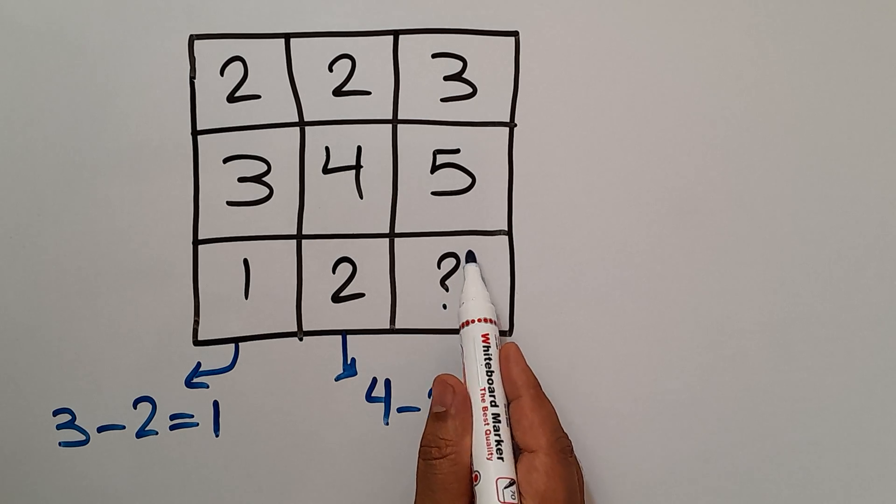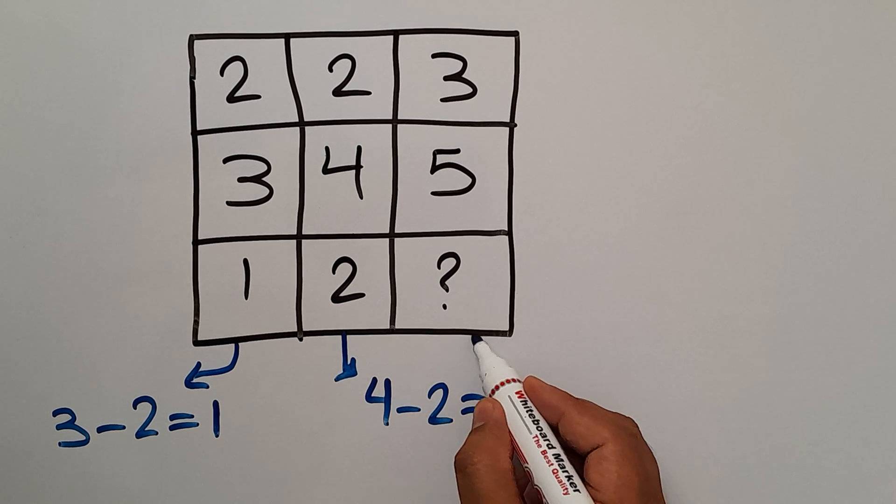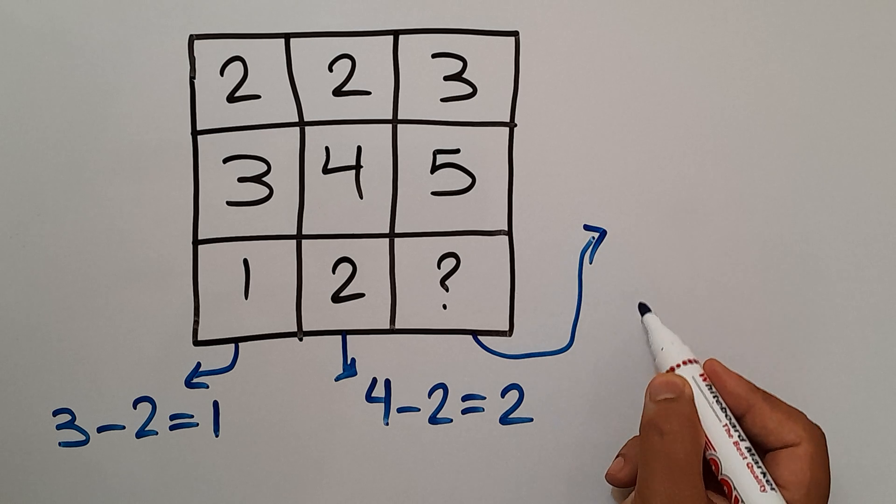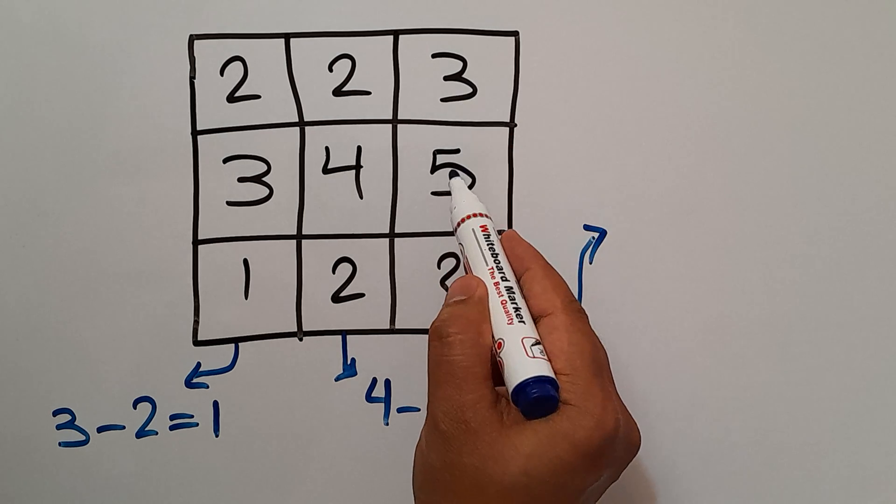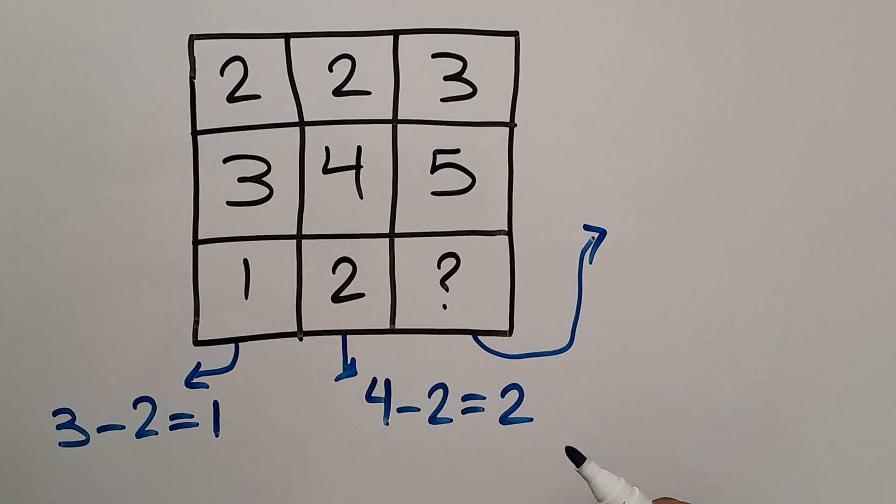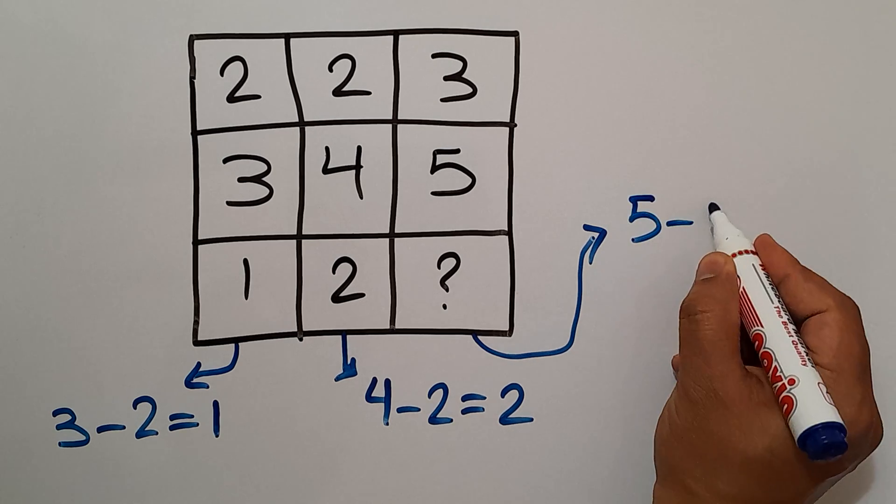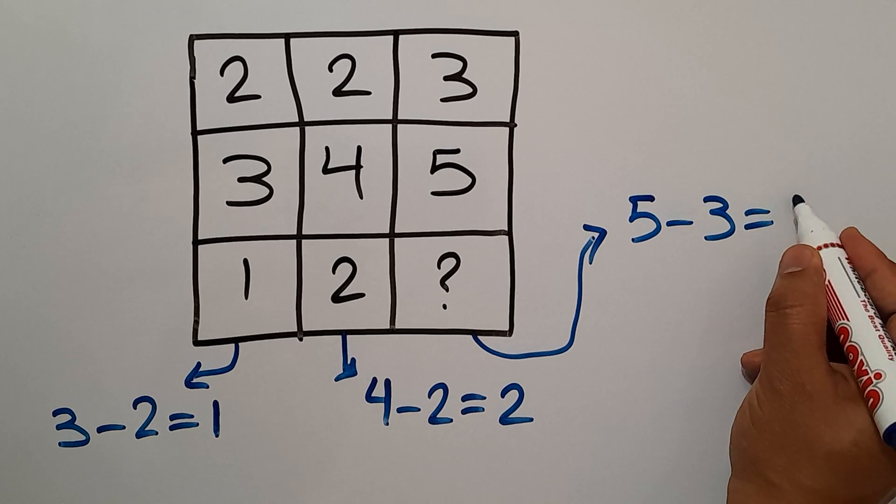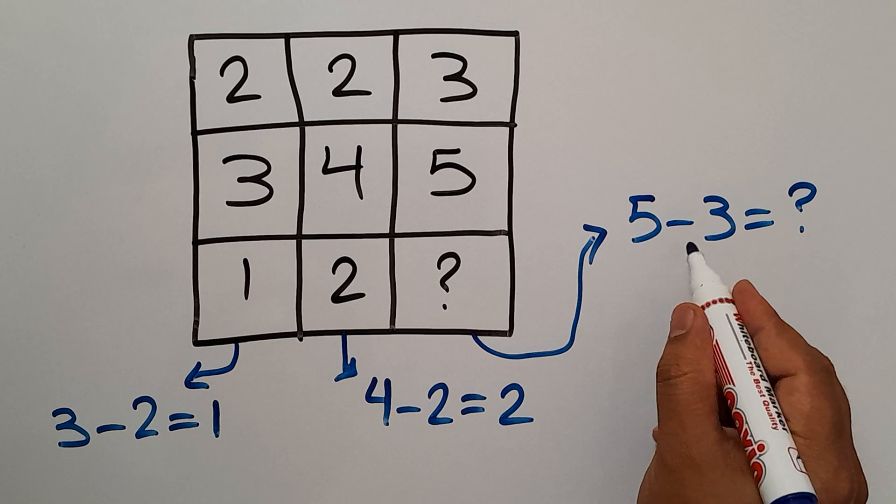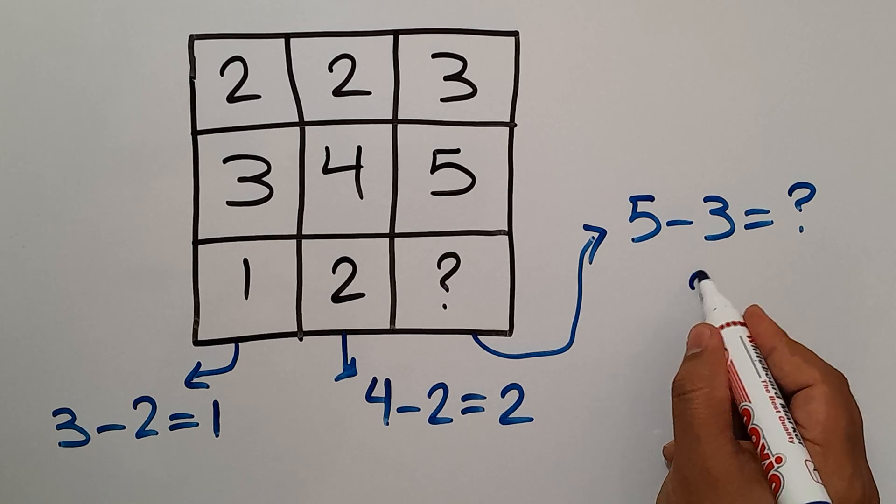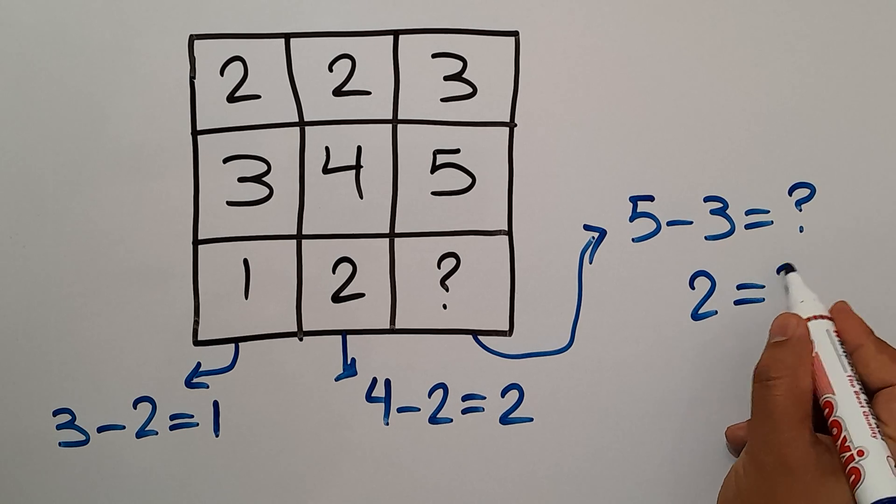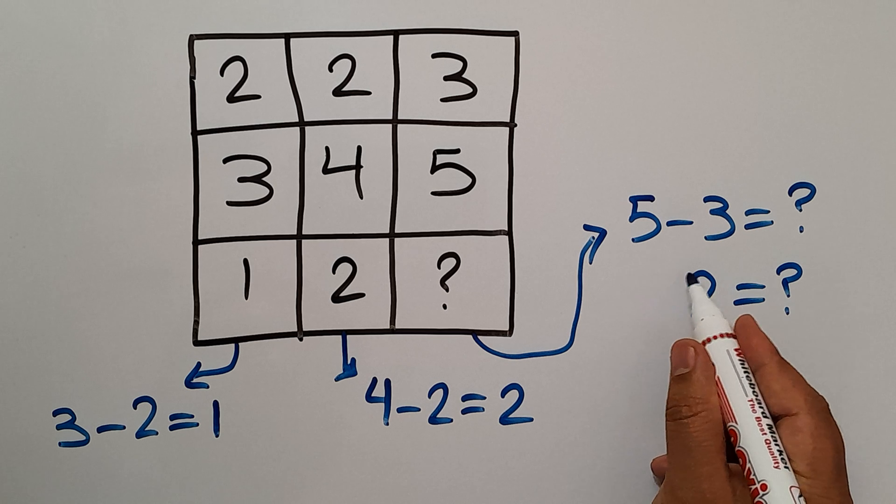In the third column we have 3, 5, and question mark. So therefore 5 minus 3 will be equal to question mark. 5 minus 3 equals 2, so therefore question mark is equal to 2.